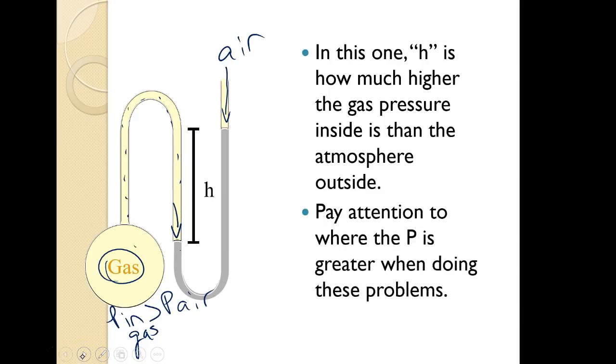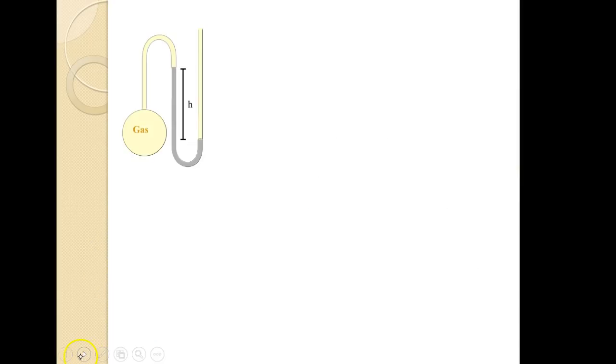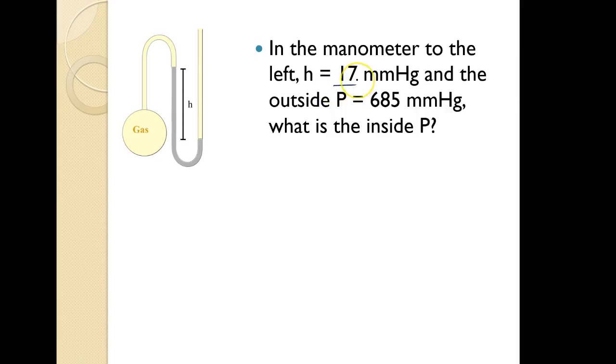So basically what you want to do when you're doing these kind of problems, and I'll show you what it looks like, you want to pay attention to where the pressure is greater. That's what you want to think about. Which one is pushing harder? Don't think about adding and subtracting automatically. Just think about where is it bigger. So sample problem in the manometer to the left, H is 17 millimeters of mercury, and the outside pressure is 685 millimeters of mercury. Literally, that's where they get the term. They measure it with a millimeter ruler, and it is mercury. So the outside pressure is pushing down with 685. The H value is 17. If you look at this, you want to think about it. The pressure of the gas inside is less than the pressure of the air outside because the outside is pushing harder. So if my outside has a pressure of 685, that means my inside has to be less than that, and it's actually 685 minus 17, whatever that is. It's 668, something like that.